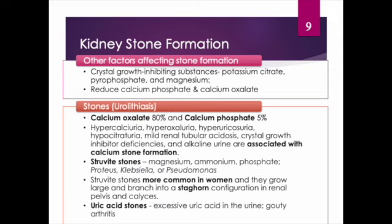Crystal growth inhibiting substances include potassium citrate, pyrophosphate, and magnesium. These substances are used to help patients deter their bodies from making further stones and help reduce calcium phosphate and calcium oxalate type stones. Both genetic and environmental factors increase susceptibility to calcium type stones. Most affected individuals have idiopathic calcium oxalate urolithiasis — meaning we don't know why they got the stone. These stones can form freely in supersaturated urine or can detach from interstitial sites of formation called Randall plaques.